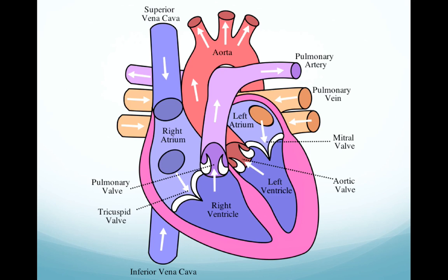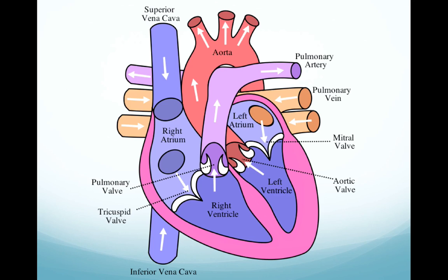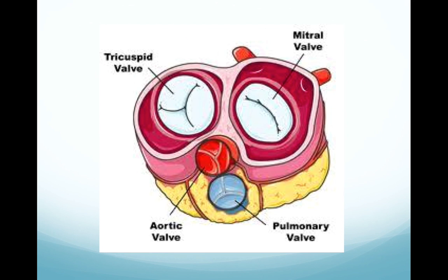The two valves between the atria and the ventricles are called the atrioventricular valves, or AV valves. The AV valve on the right side is called the tricuspid valve because it has three flaps or cusps. The AV valve on the left side is called the bicuspid or mitral valve because it has two flaps, and those two flaps look like a mitre hat. You can see the tricuspid valve with its three flaps and the mitral valve with its two flaps in the diagram. Also notice the aortic valve and the pulmonary valve — they have three cusps as well.